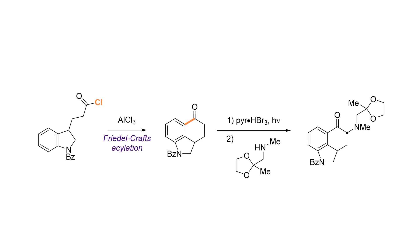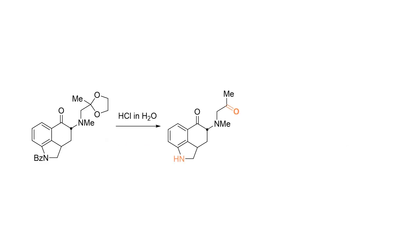The resulting aryl ketone was photolytically brominated in the alpha position. If you're at an undergrad chemistry level, think about why the authors didn't choose, for example, basic conditions for the alpha-bromination. Next, the sidechain containing the second ketone masked as an acetal was introduced by a nucleophilic substitution. Deprotection of the acetal afforded the diketone required for the intramolecular aldol condensation. Pay attention to the fact that this deprotection also accidentally deprotected the dihydroindole amine, so a protecting group would need to be reintroduced later on.